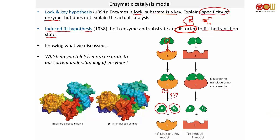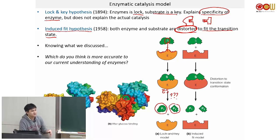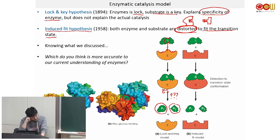Here you have an enzyme that catalyzes a reaction with glucose. Before glucose binding, it looks one way. After glucose binding, you see a shape distortion or conformational change — with glucose bound inside, the shape change brings it to the transition state. This is theoretical, of course; it is very difficult to capture the transition state shape experimentally because the transition state is very short-lived. Transition state analogs exist but are never the true transition state, so the real shape is always difficult to obtain.